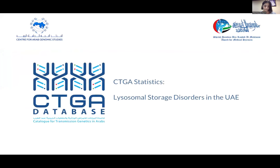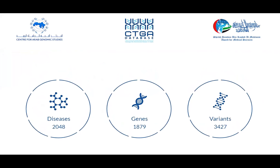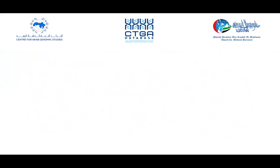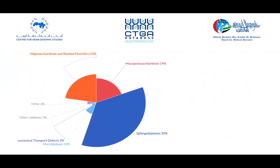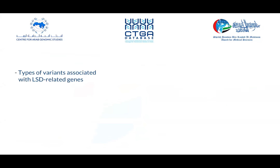Hi everyone. As Stephanie mentioned, I'd like to take a couple of minutes to showcase the data that the CTGA database offers on lysosomal storage disorders. The database presents disease, gene, and variant data reported in anonymous Arab subjects. For this snippet, we will focus on the Emirati data within CTGA. CTGA currently holds data on 48 LSDs belonging to multiple subtypes. 31 of these disorders have been described in the UAE in association with 27 genes. 43 variants in LSD-associated genes have been identified in UAE subjects.